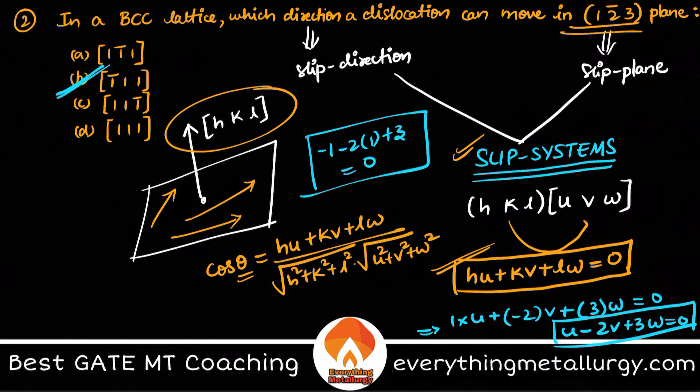What are the key takeaways from this particular question or this concept? The cos theta, the slip systems, and how you can mathematically not derive, but how mathematically you can solve if these particular kinds of questions are asked.